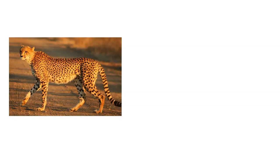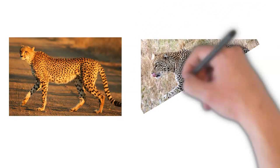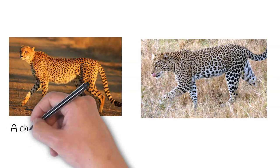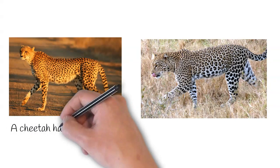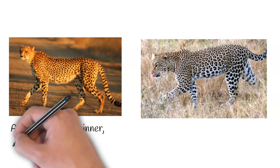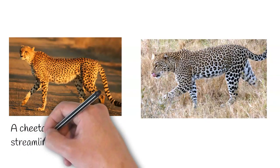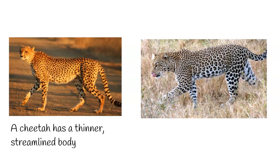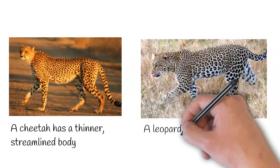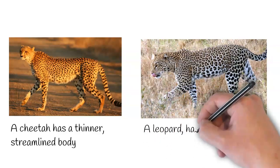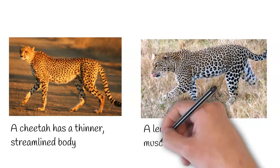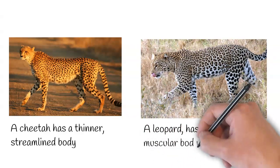Both cheetah and leopard have very different body structures. A cheetah has a very thin and streamlined body structure — it is made for running. A leopard, on the other hand, has a very strong muscular structure.